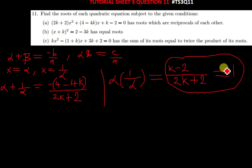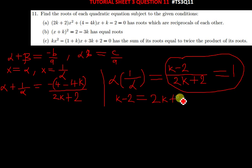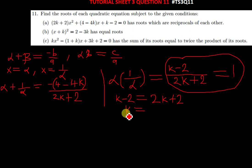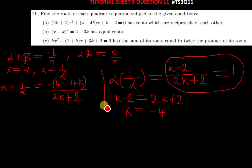If we cross multiply, we get K minus 2 equal to 2K plus 2. When we simplify, moving K to the other side gives 2K minus K which is K, and the constants give us negative 4. So we've found the value of K equals negative 4.